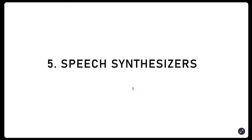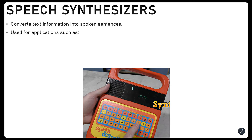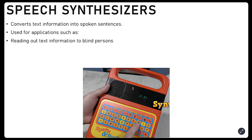There is another type of output called a speech synthesizer. You may not have heard about this. A speech synthesizer is basically an output device used by people who cannot see — blind people. If you write something, it reads out the text information and converts it into spoken audio through the speaker.